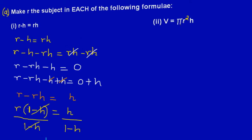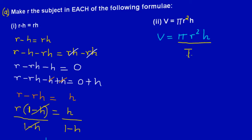Now let's quickly look at part 2. Here we have V is equal to Pi R squared times H, and they are asking us to make R the subject. Pi and H are really multiplying R squared. So to get rid of that we need to do the opposite of multiplication, which is to divide through by Pi H. Pi H will cancel out — H cancels with H and Pi cancels with Pi. Remember what I do to one side I have to do to the other, so I divide both sides by Pi H.